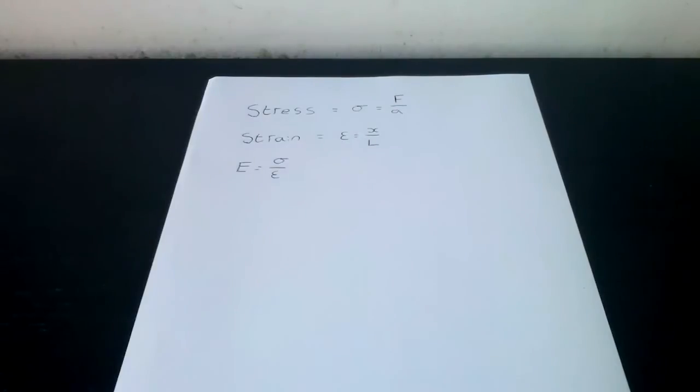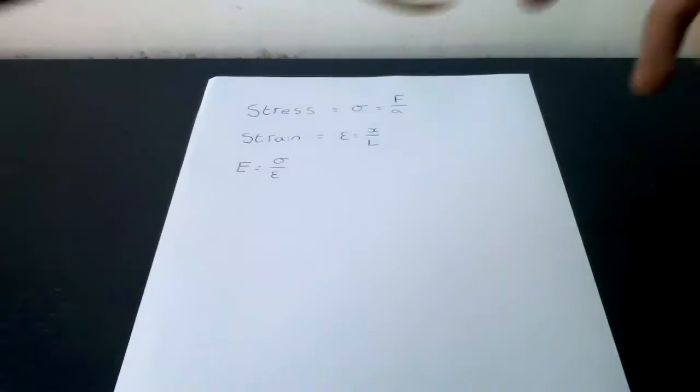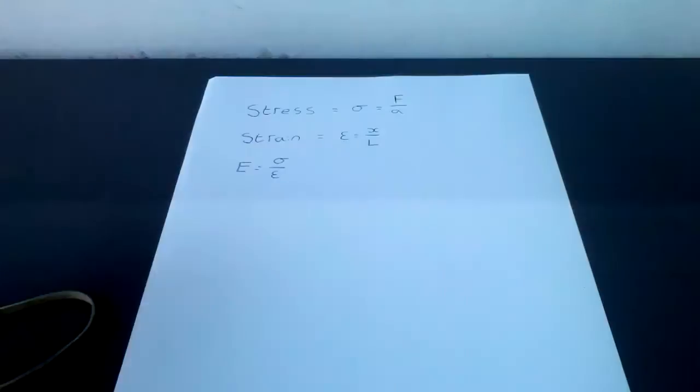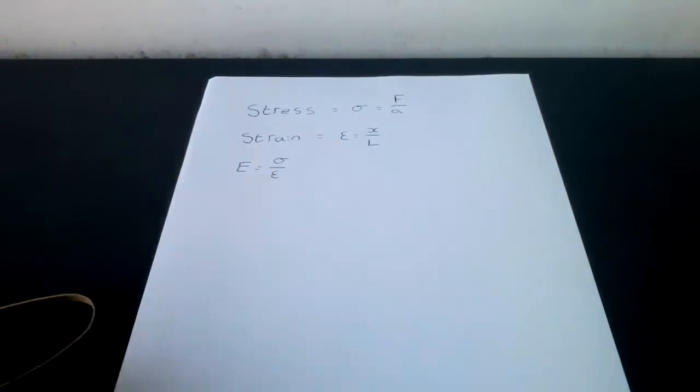A member of a structure that is in compression is called a strut and a member in tension is called a tie. A push causes compression and a pull causes tension. For instance, this elastic band when I stretch it is in tension, therefore called a tie, and when I compress this blue tack it is a strut.